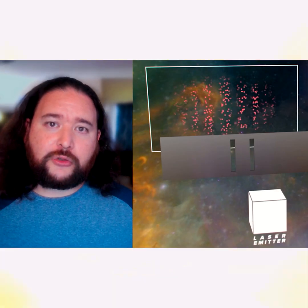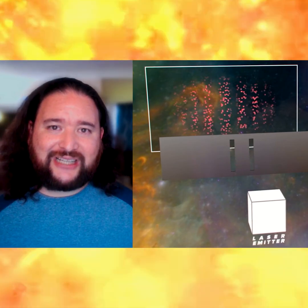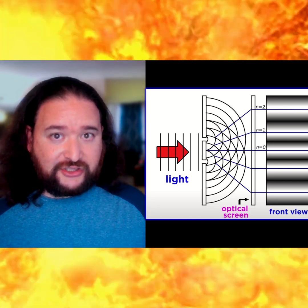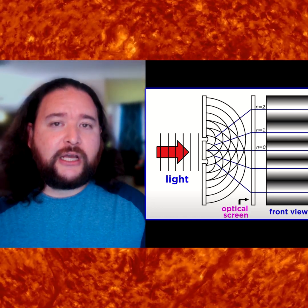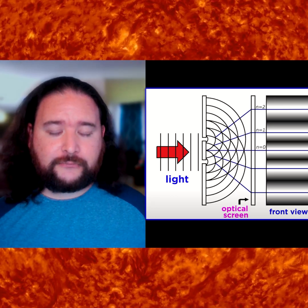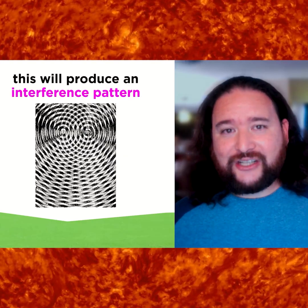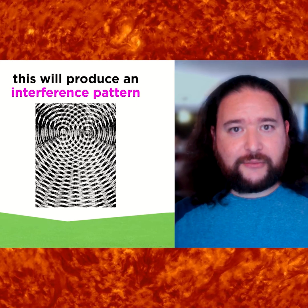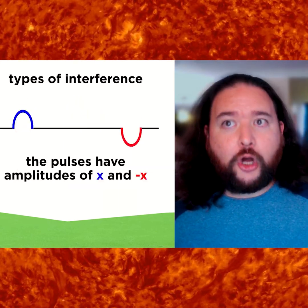But what we find experimentally is that it behaves more like a wave of light. If you shoot a single electron through a double slit, it will act as if it went through both slits and then interfere with itself on the other side, creating what we call an interference pattern. Light has a unique property that you can add it to itself — a beam of light plus a beam of light can equal a brighter beam of light.